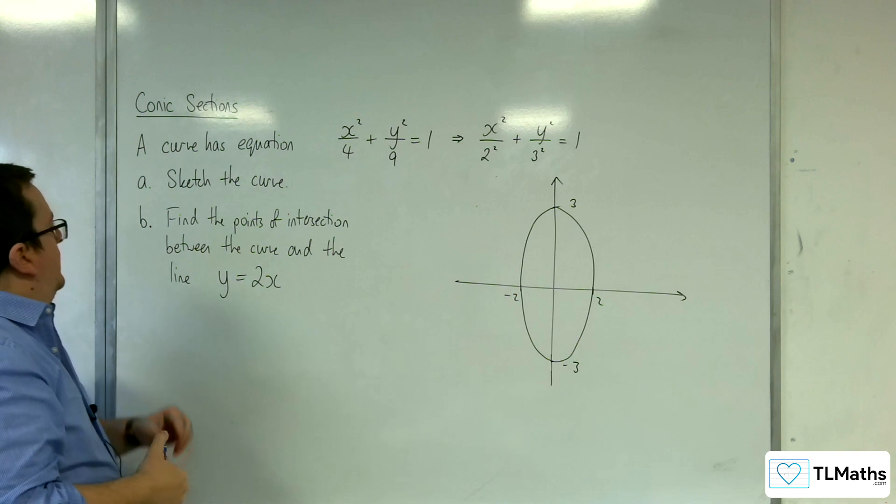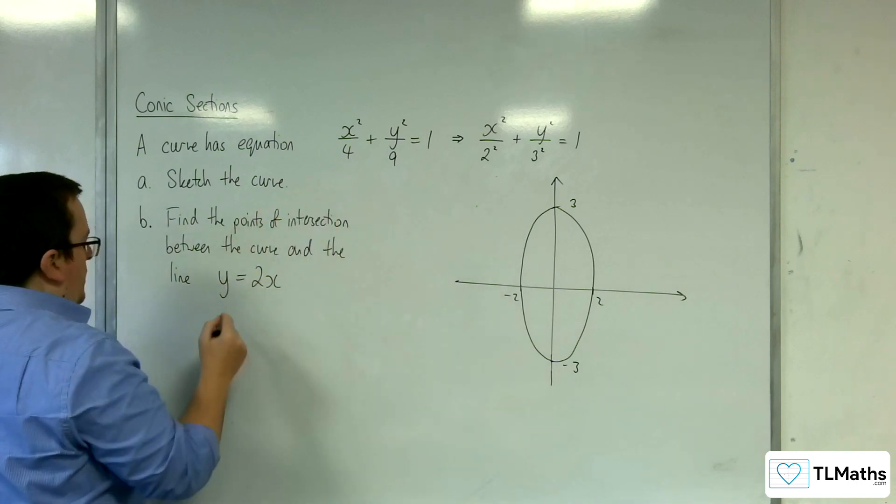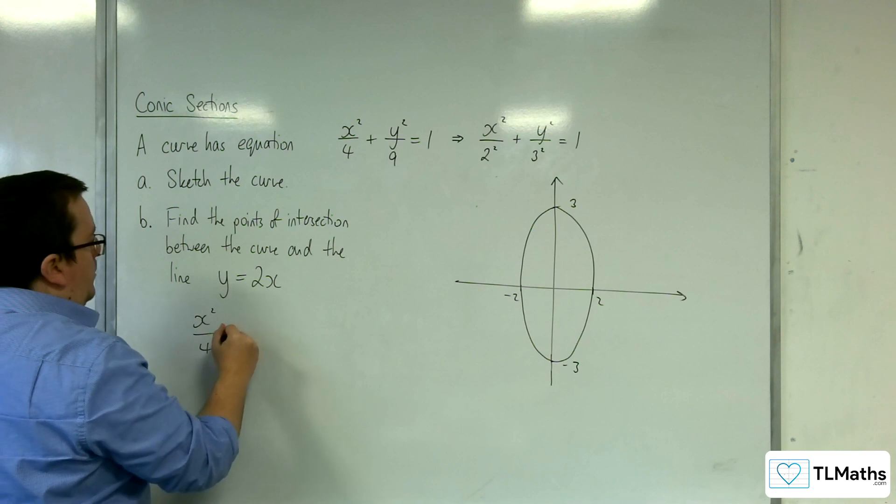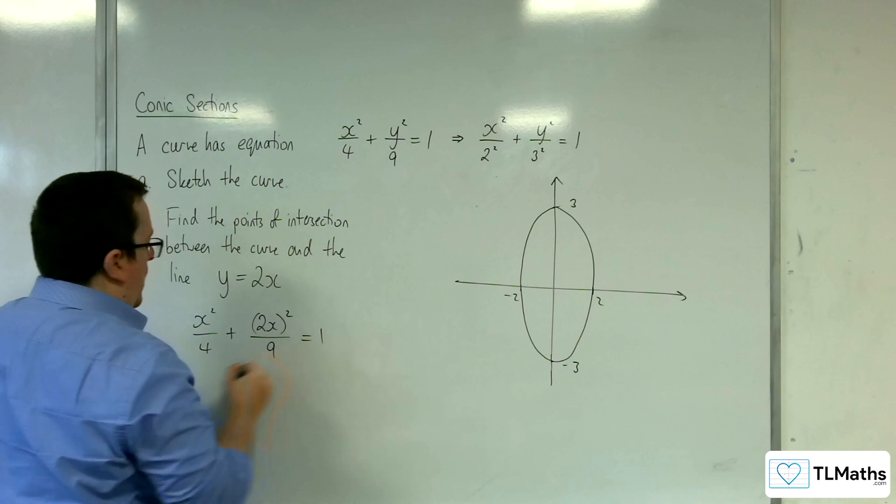Part B, find the points of intersection between the curve and the line y equals 2x. So I just need to substitute y equals 2x into the equation. So x squared over 4 plus 2x squared over 9 is equal to 1.